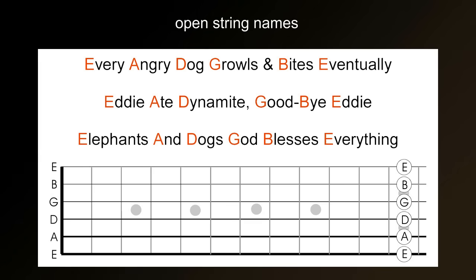When memorising the names of the open strings, you're also memorising the names of the notes on the 12th fret. This is why many guitars have a double dot or an accented marker on the 12th fret, because it's an octave above the open strings. I'll explain octaves later in this tutorial.